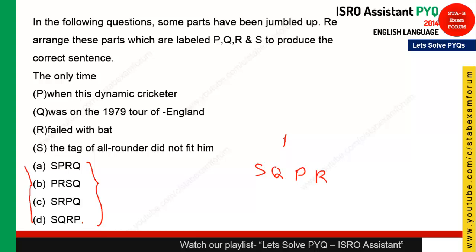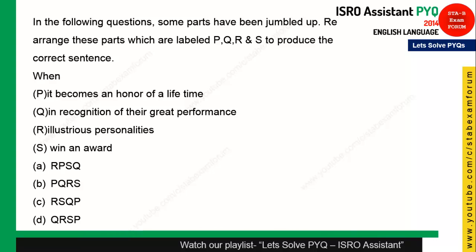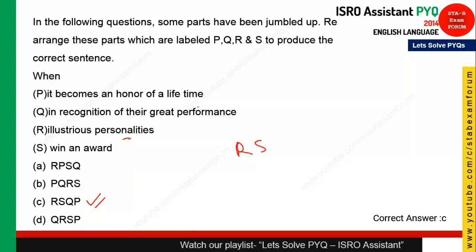For the next tricky para jumble, the correct order is SQPR — the only time the tag of all-rounder did not fit him was on the 1979 tour of England when the dynamic cricketer failed with the bat. Note that SQPR is the right answer, though it may not appear exactly in the given options. For the third jumble: 'When an illustrious personality wins an award in recognition of their great performance, it becomes an honor of life' — option C is correct.